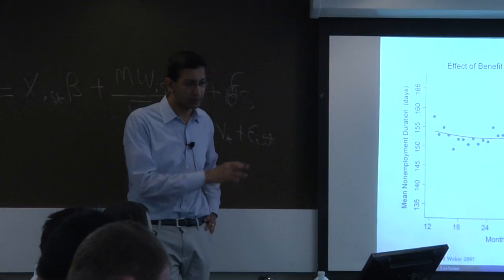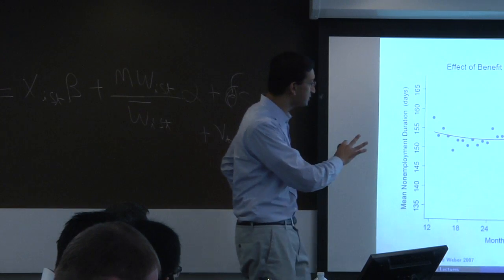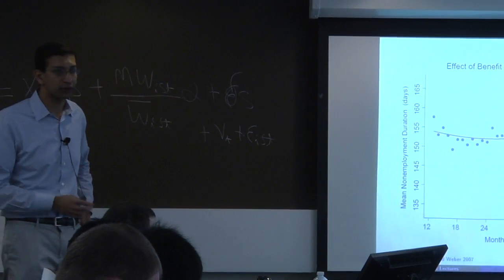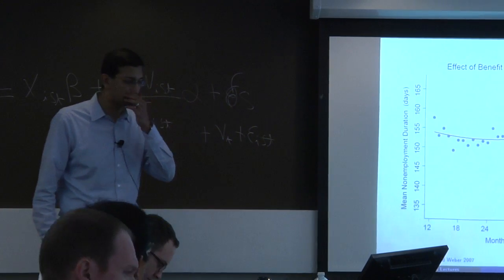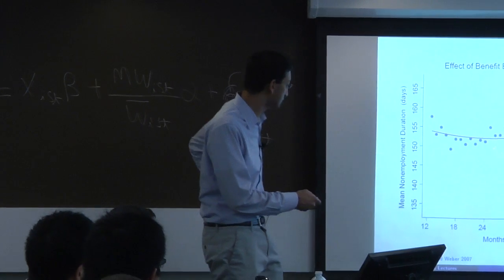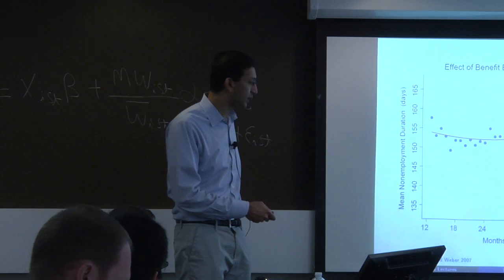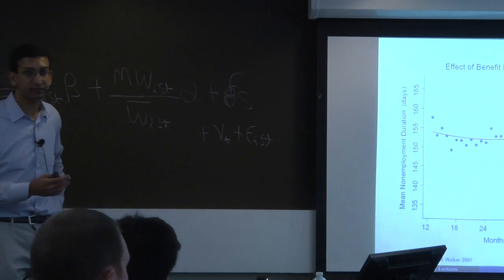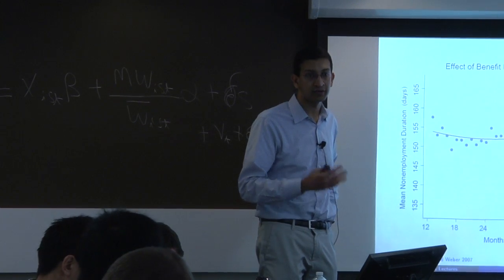I want to start by reviewing something we discussed at the end of the last lecture: evidence on how unemployment benefit extensions affect unemployment durations and subsequent match quality. This is from our paper with David Hart and Andrea Weber, looking at a discontinuity in the Austrian data where if you're to the right of the cutoff—having worked more than three years within the past five years—you're eligible for an additional 10 weeks of unemployment benefits: 30 weeks instead of 20 weeks.